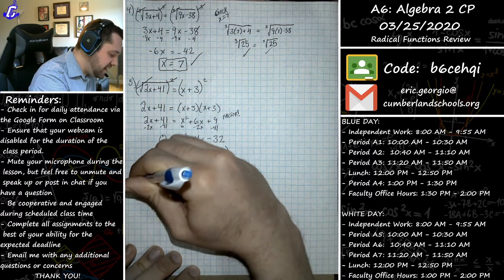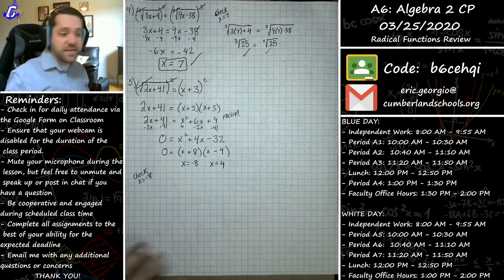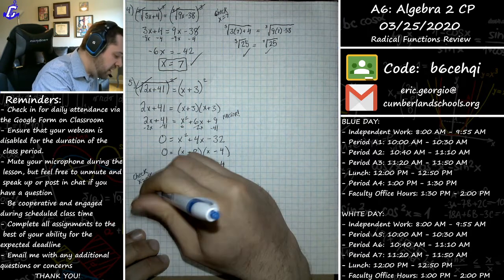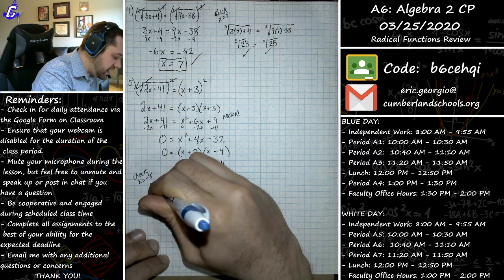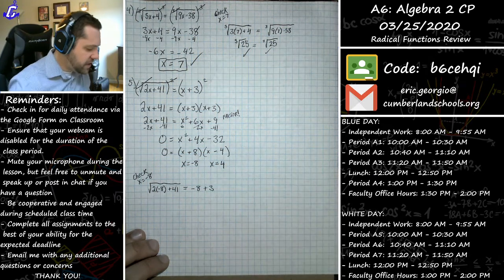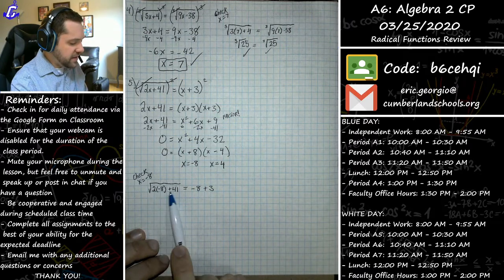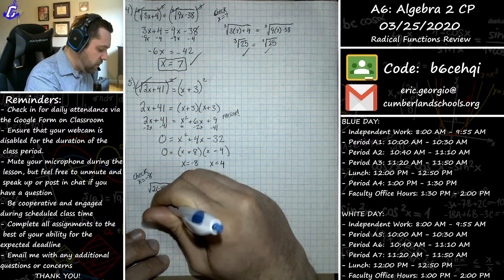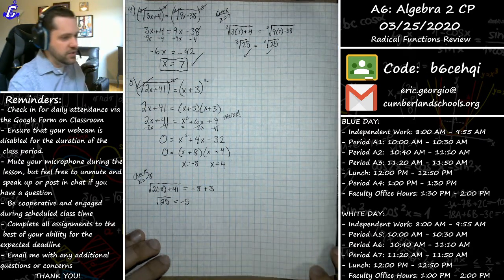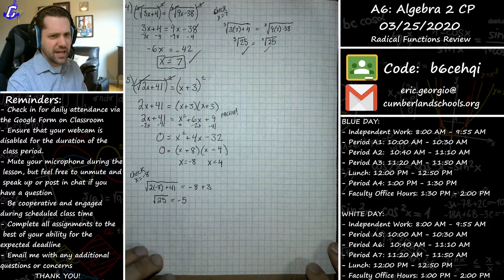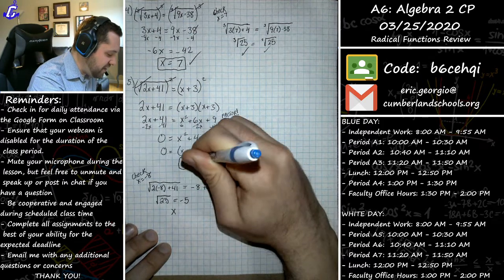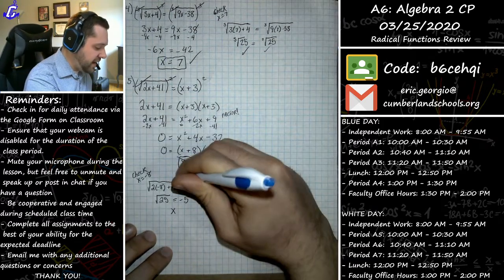We still have to check both for extraneous solutions. First, when x = -8: is it true that the square root of (2·(-8) + 41) equals -8 + 3? We get the square root of (-16 + 41) = √25 = 5. But -8 + 3 = -5. The square root of 25 does not equal -5, so x = -8 is extraneous.